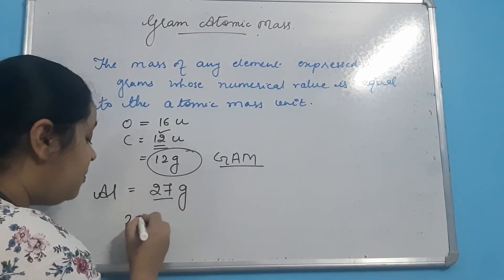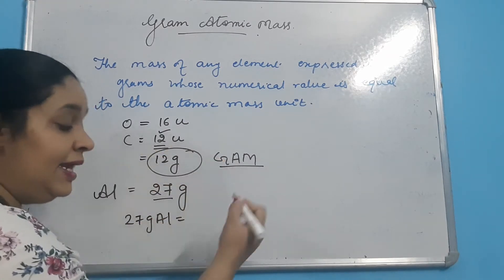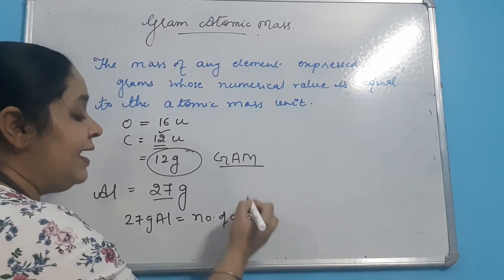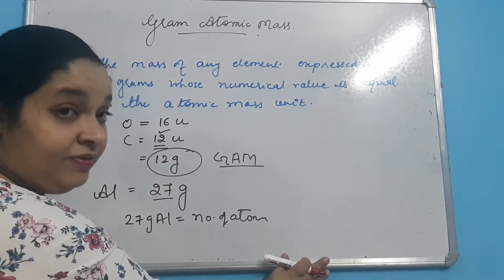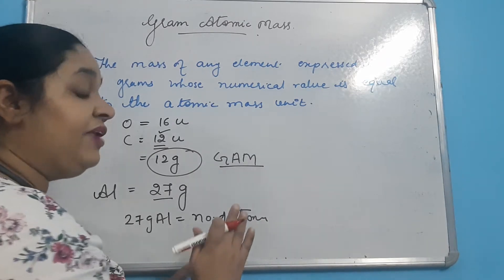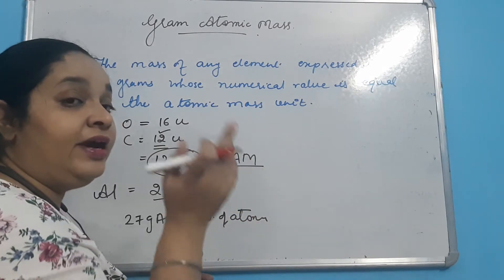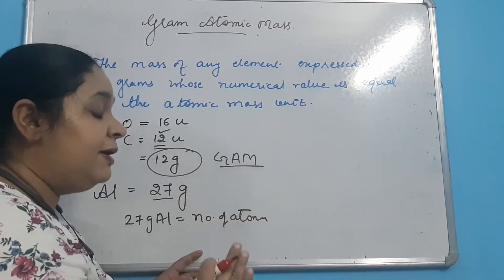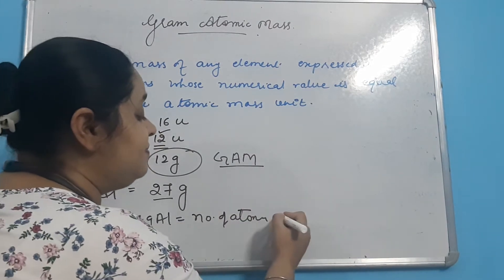Aur gram atomic mass mein jitnay bhi atoms honge particular element ke — jaise 27 gram mein aluminium ki frame hai — to is aluminium ki frame mein jitnay bhi atoms hain, woh Avogadro's constant ke barabar hote hain. But woh topic mein longe mole ke saath. So ye jo atoms hain, in ko kehte hain one gram atom.